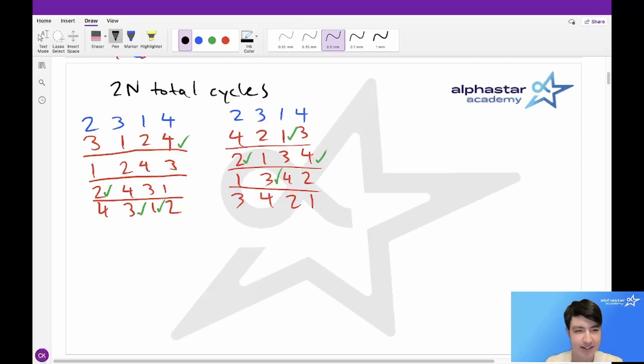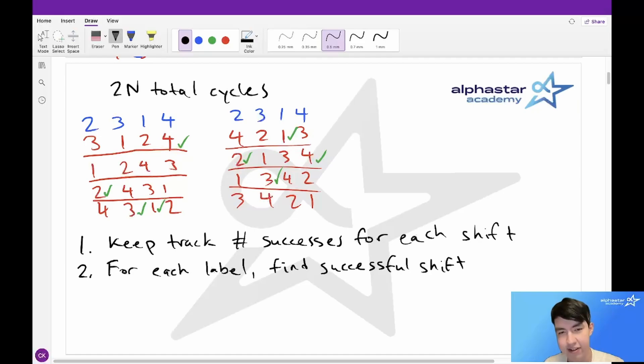And the way that we can do this quickly is by looking at each individual number, calculating using math which cycle or which shift that it corresponds to, and then adding 1 to the success count for that shift. So, in all, our solution is going to look like this. First, we keep track of the number of successes for each shift, and we check for each number for each label. You can find the successful shift using math, and then we add 1 to the number of successes for that shift. And then, once we're done that, we repeat for the backwards cycle. Or do it at the same time, it doesn't really matter.